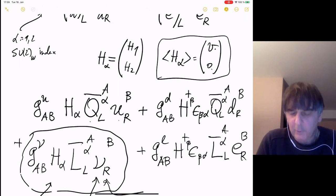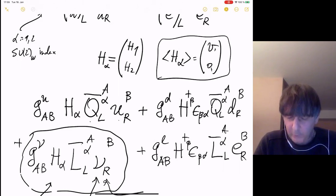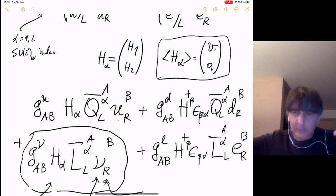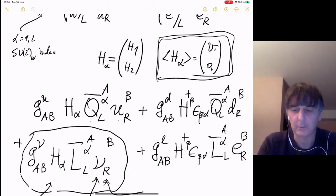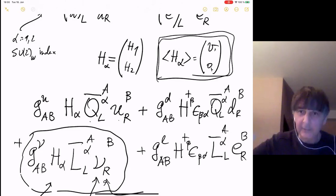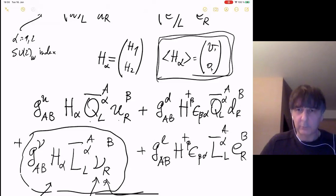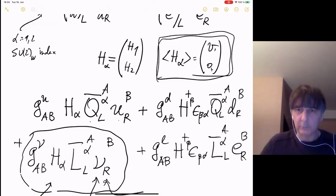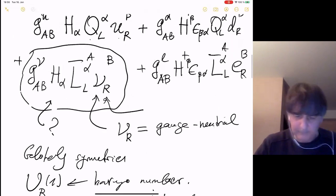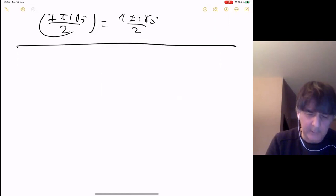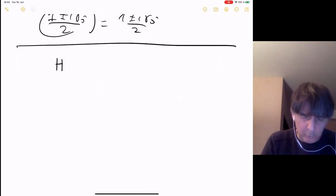Sometimes students get confused: since you can put the expectation value on the upper component and get a mass for the up quark — what if you put it on the lower component? Of course nothing changes physically; you would just have to redefine your quark names. No matter what you do, because this is a symmetry, in any vacuum you choose physics will be the same — one quark with up-quark mass, one with down-quark mass, and always one massless gauge boson which will be the photon.